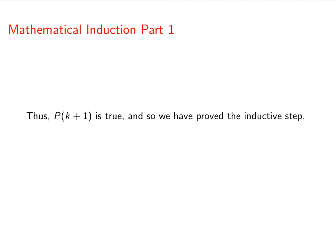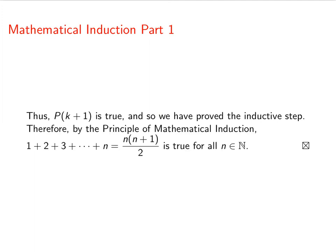Therefore, P(k+1) is true, and that means we've proved the inductive step. So our conclusion is, by the principle of mathematical induction, the sum of the first n integers is equal to n times n plus 1 over 2, and that's true for all n in the natural numbers. Okay, that's all for now.